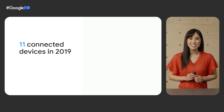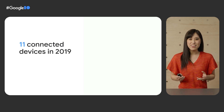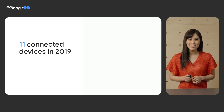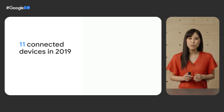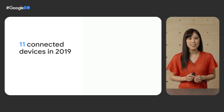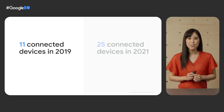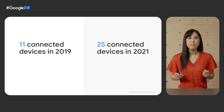Let's start with users. We can do so much with technology today, so it's no wonder that many of us are adding more and more computing devices to our homes. For example, in 2019, the average US household had 11 connected devices. In 2021, that went up to 25.